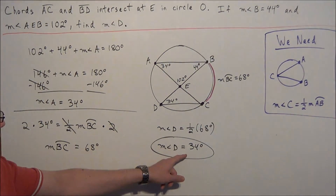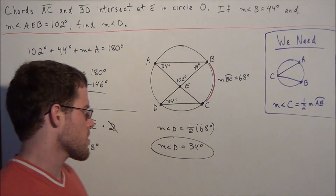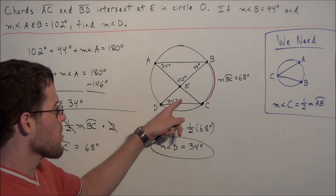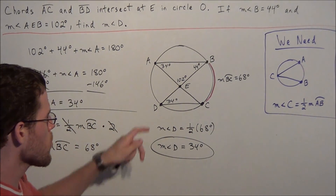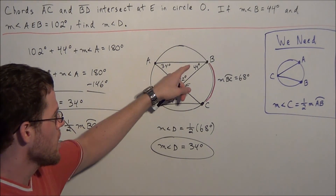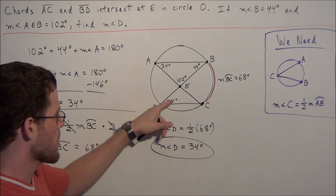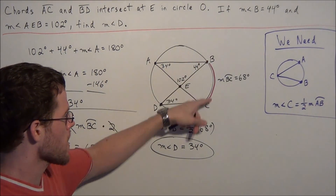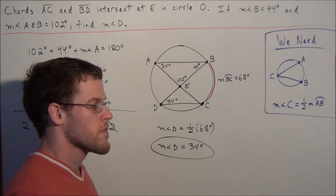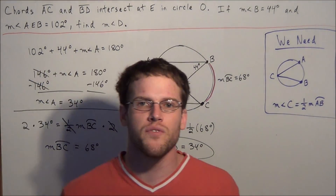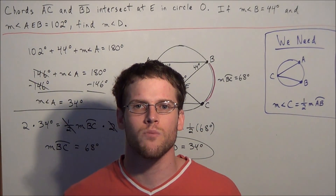So we have our final answer: the measure of angle D is 34 degrees. This shows that when working with circle geometry, when targeting an inscribed angle's measure, you always want to focus on the arc that the angle intercepts — because if you can find the measure of that arc, you can find the measure of the angle. This concludes the video on inscribed angles. Thank you all for watching, and I hope this was helpful.